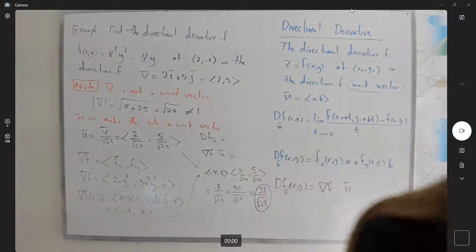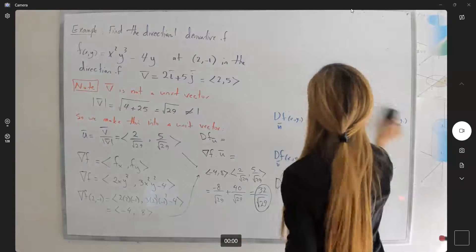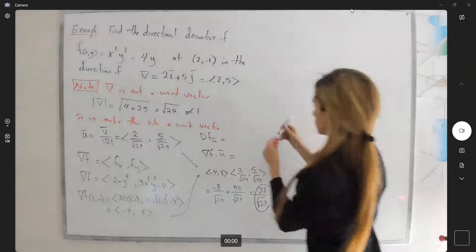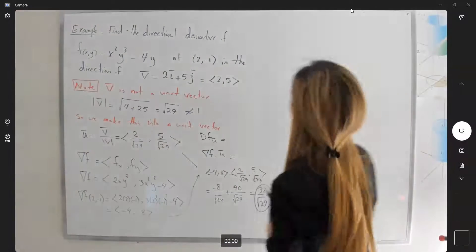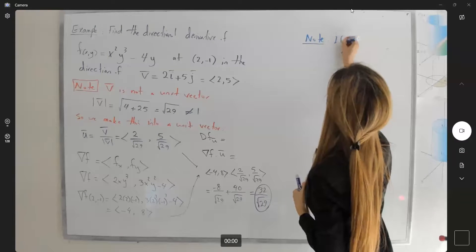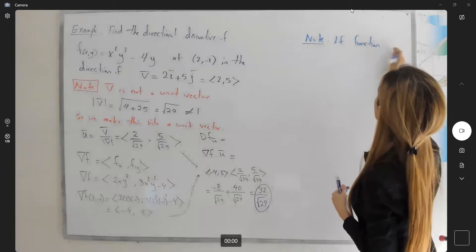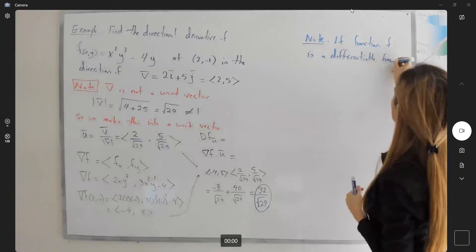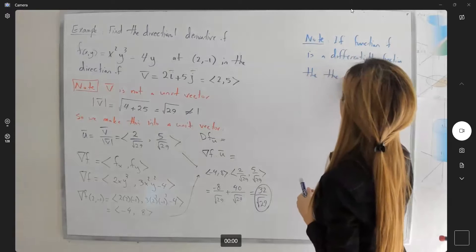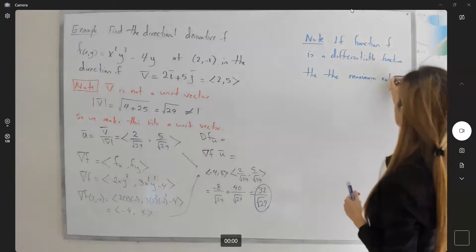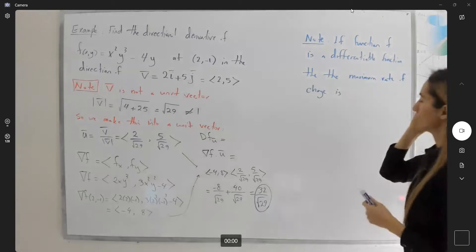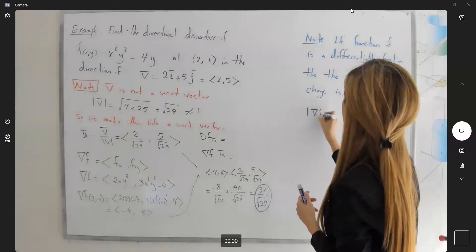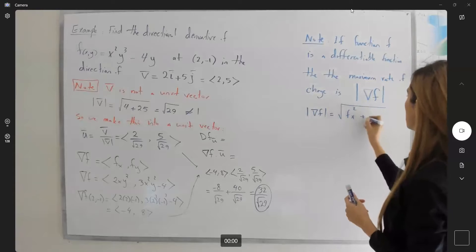Two comments. Note that if function f is a differentiable function, then the maximum rate of change is equal to the magnitude of your gradient. This is equal to the square root of f of x squared plus f of y squared.